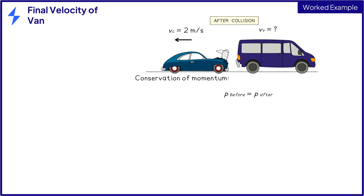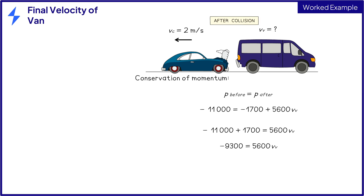The final step is to use the conservation of momentum to equate the momentum before and the momentum after. So minus 11,000 is equal to minus 1,700 plus 5,600 times the final velocity of the van. Rearranging and simplifying gives minus 9,300 is equal to 5,600 times the velocity of the van. Then divide both sides by 5,600 to get the final velocity of the van, which is equal to minus 1.66 meters per second for the final mark.